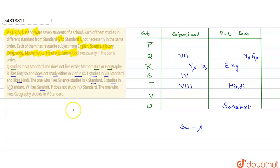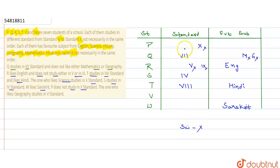Next, P does not study in 10th standard — P हमारा 10th में नहीं है. The one who likes Geography studies in 5th standard — जिसे Geography पसंद है वो 5th में है. अब 10th तो P को नहीं आ सकता, तो P को 5th standard लेते हैं और उसका subject Geography आएगा.